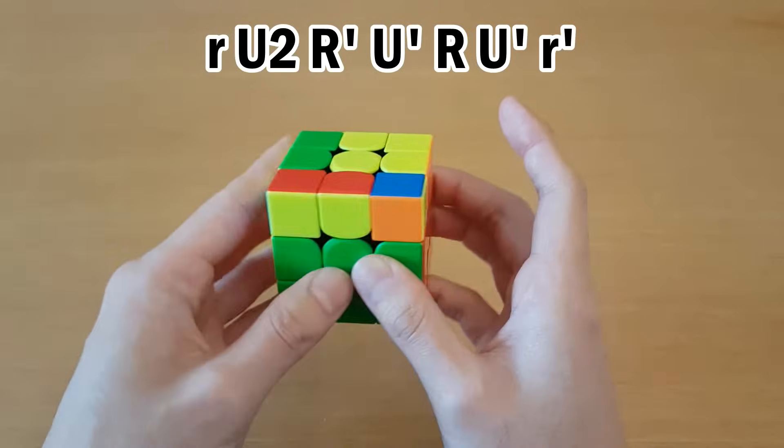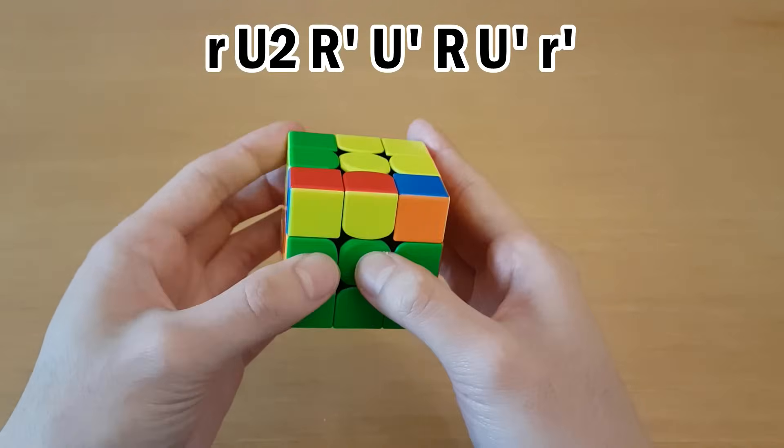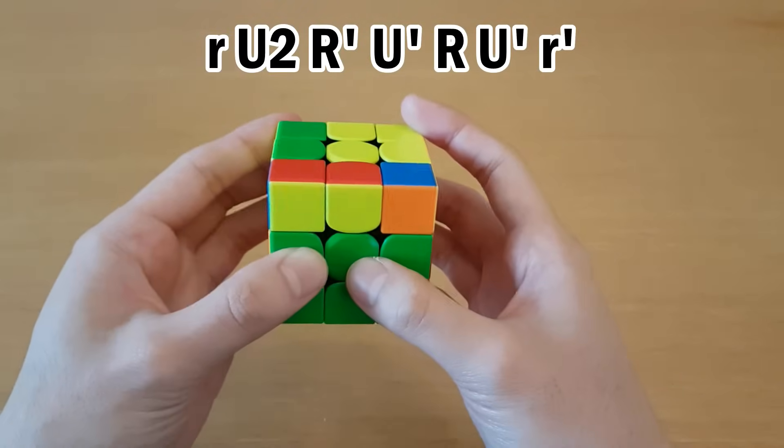Another thing I used to do is for this OLL, I would re-grip like this to do the U-2 with this hand. For some reason I found this more stable, but you really shouldn't need to do that, you can just do U-2 with the other hand instead.